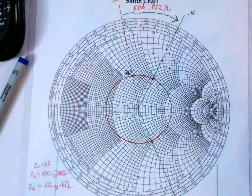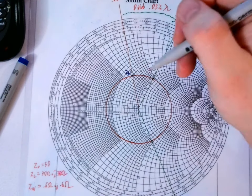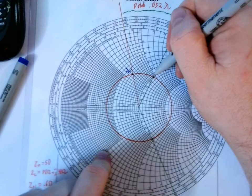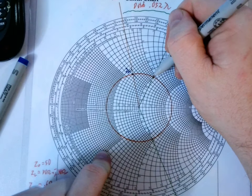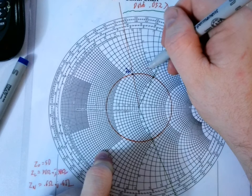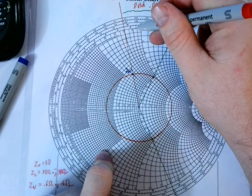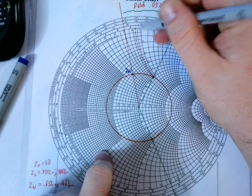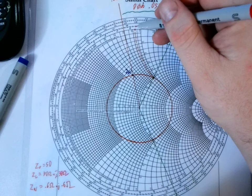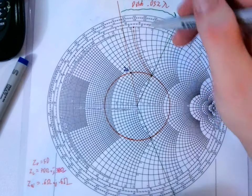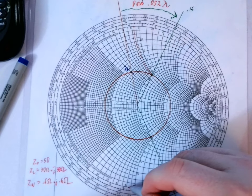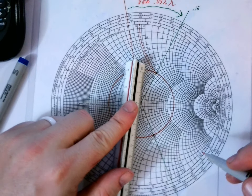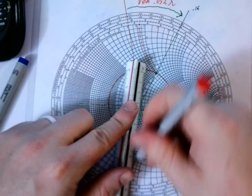Okay, so the next thing we need to know is the length of the stub. And in order to do that, we need to find out, this line here, this is our stub, we need to find out what the reactance is that we need to cancel out. So to do that, we follow from this point out to the edge, right here. And now we need to find that on the bottom, and that looks about like .925.